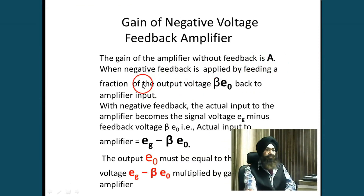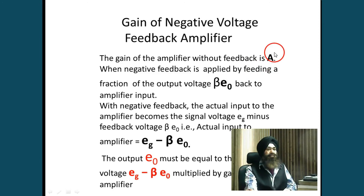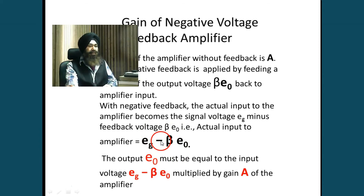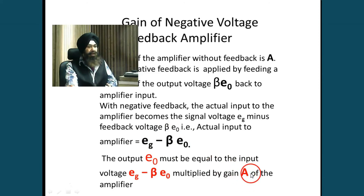Amplifier gain is A and output voltage is E0. When given to the beta network, the output voltage becomes a proportion — that is beta times E0. A is the amplifier gain, and beta E0 is the feedback voltage. If the feedback voltage is subtracted from the signal EG, it is a negative feedback circuit. If it is added to the input signal, that is positive feedback. If it is minus, it is negative feedback. The output E0 is the result of the amplifier A acting on the net input.